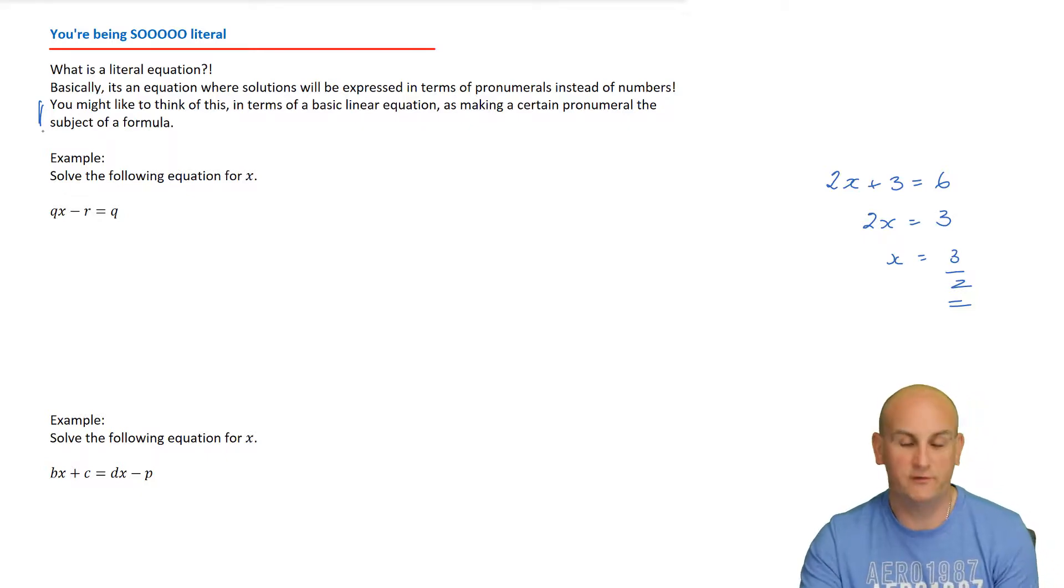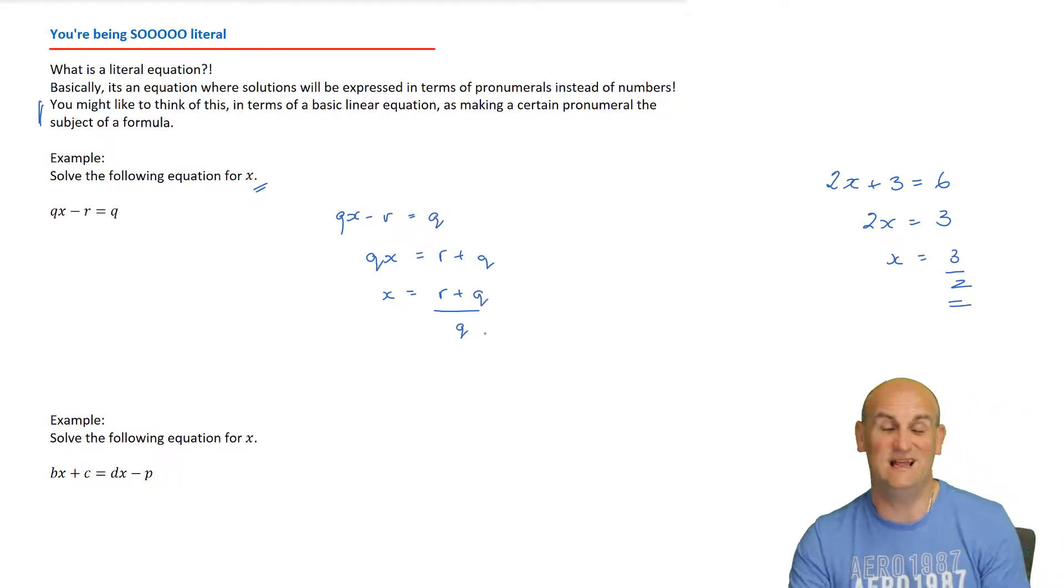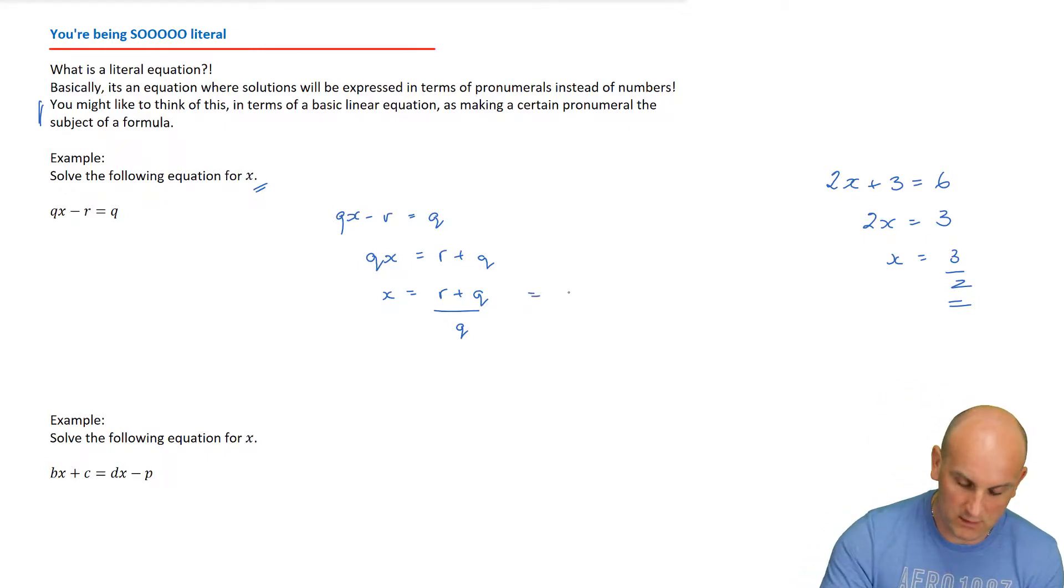So an example might be qx minus r equals q. We'll rearrange things and get x on its own. So qx minus r equals q. I'm going to add r to both sides and we get qx equals r plus q, and x is going to equal r plus q all divided by q. Actually that's pretty much it.